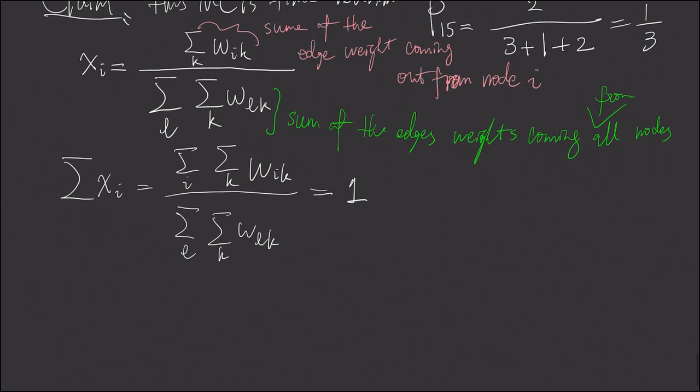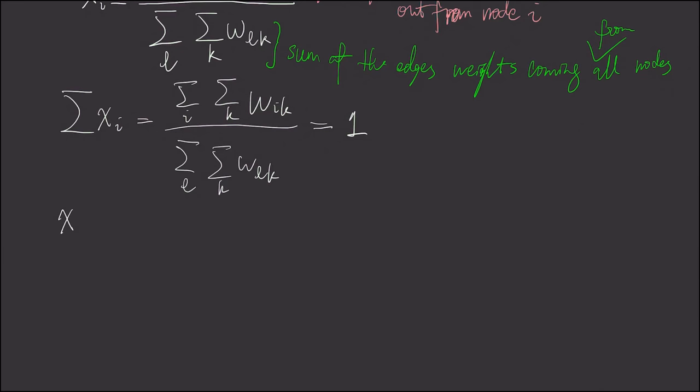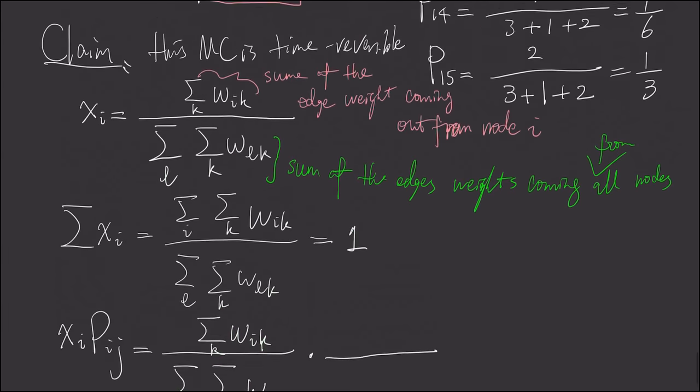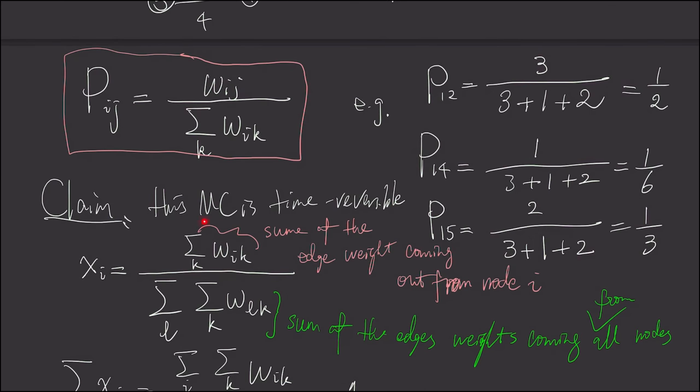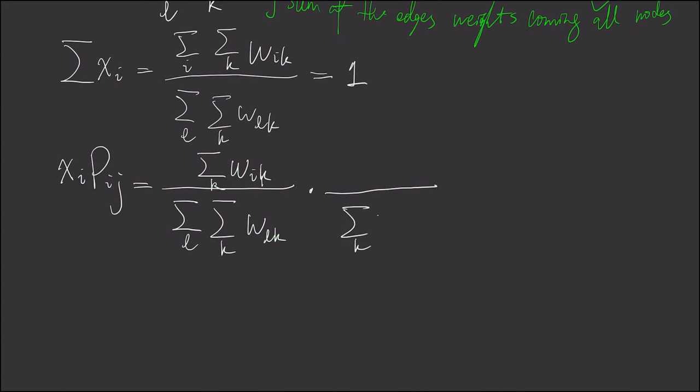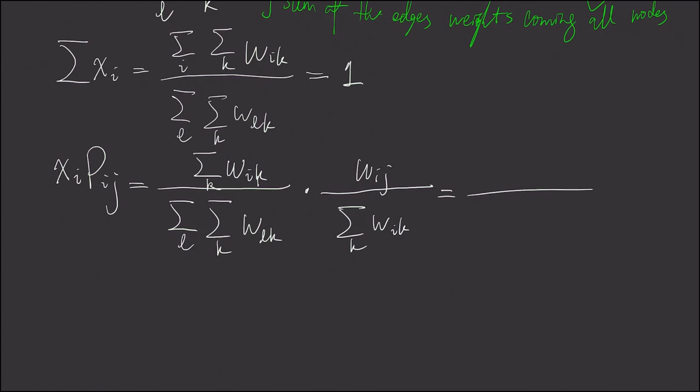And moreover, let's check what is xi times pij. Now we copy down the sum. Xi has numerator of all the edge weights coming from node i, divided by this sum. And then multiply, if we look at pij, if we scroll back, we'll find that the numerator here is actually the denominator here. And now, here is where the cancellation goes along. It will cancel, and what's left is wij, divided by this sum.